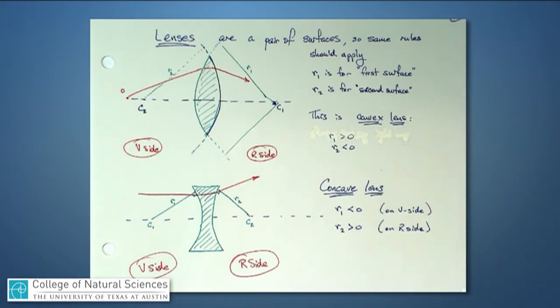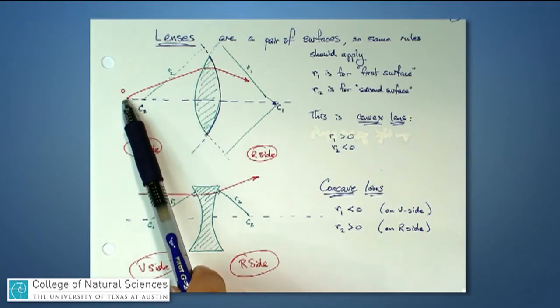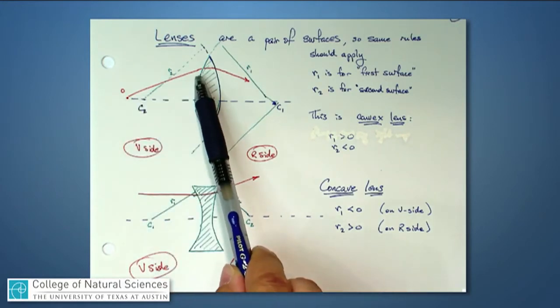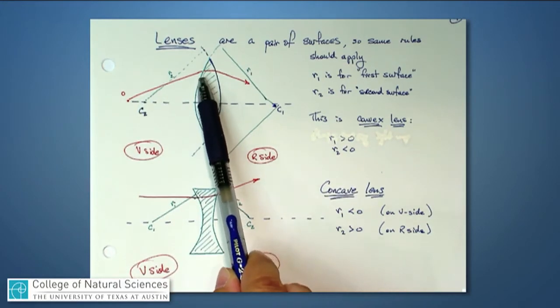And the same rules or principles as we developed for a spherical refracting surface apply to lenses. The only added information here now is that there are two surfaces. The light is coming from some object, and we'll continue to work from left to right here. The light is coming from some object, passes through one surface, and refracts right here.